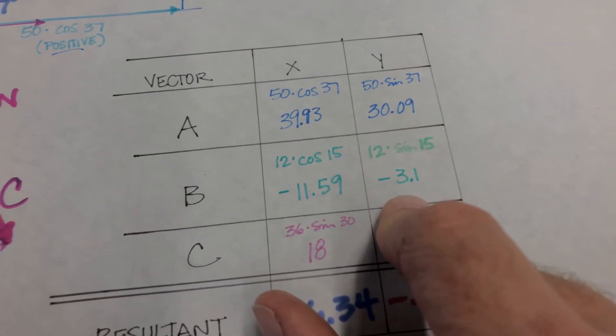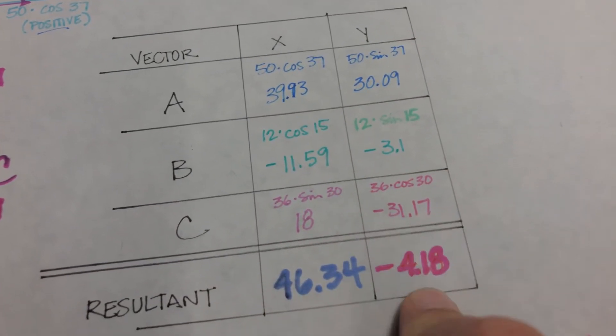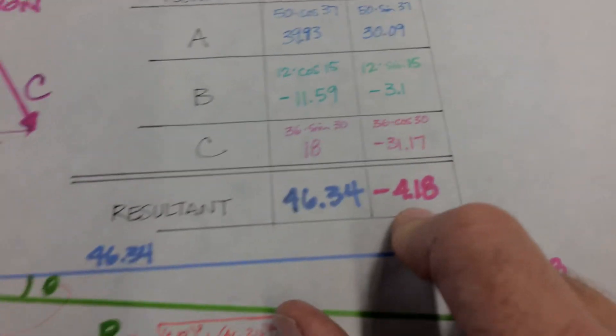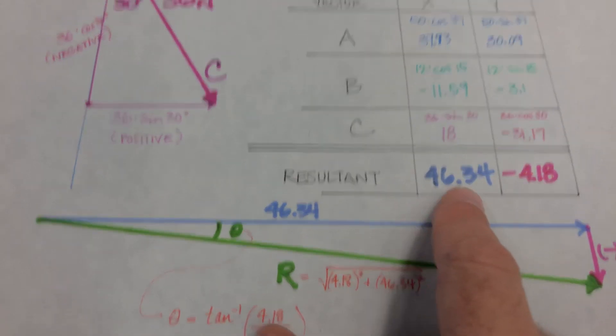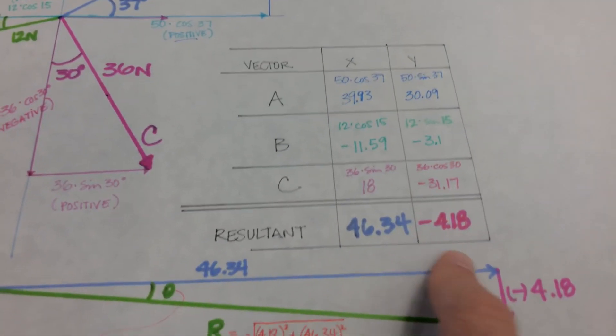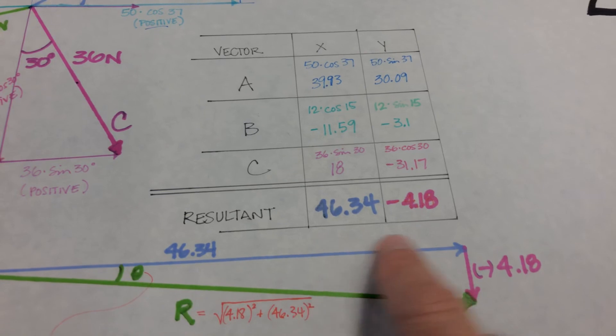And then we take this number minus this minus this, and we get this. Now, we get a resultant vector by adding the positive X and the negative Y. 46.34, 4.18.